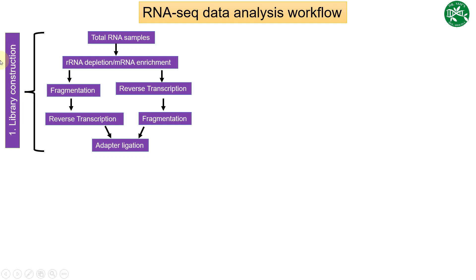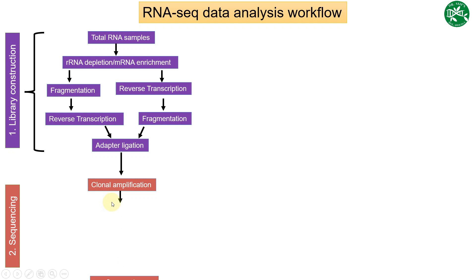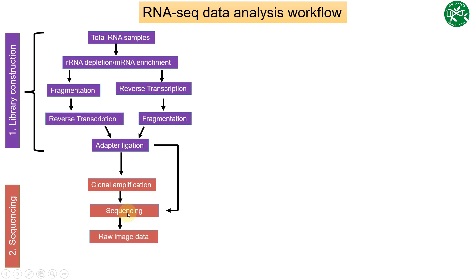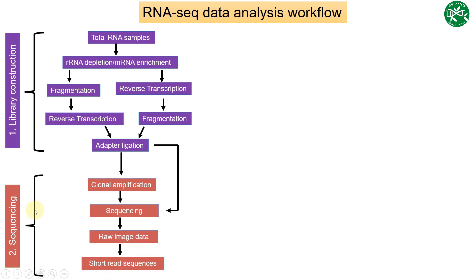When we have constructed our libraries, our second step — sequencing — begins. Depending upon the samples, sometimes we do clonal amplification and sometimes we directly approach sequencing after the adapter ligation. Sequencing is done through raw image data in the form of colors, and those raw data images are further processed into short read sequences. With that, the second step of RNA-seq data analysis, which is sequencing, is finished.